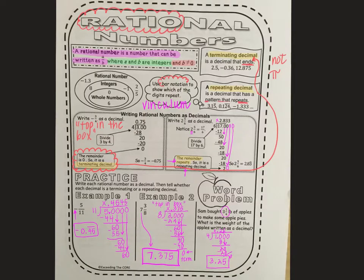We went through rational numbers in general. We talked about writing them as a fraction, so a over b, where a and b are integers, but remember b can't be zero. We can't have the denominator be zero — you can't divide by zero.